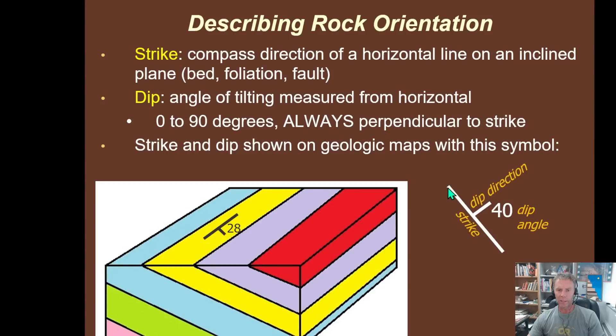With the strike and dip symbol we use on geologic maps, the long line is the strike. So in this case, it would be a northwest to southeast strike, assuming north is up. The dip direction here would be to the northeast. And then we have the little angle here - 40 degrees. It's tilted down from the horizontal 40 degrees. We don't put the little degree symbol here because it's understood. You don't need any units or the degree symbol. So that's the strike and dip symbol that would be used as an example here.